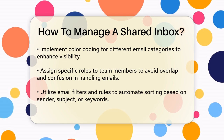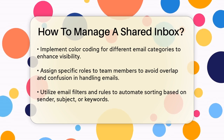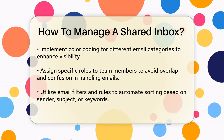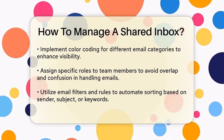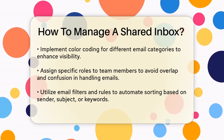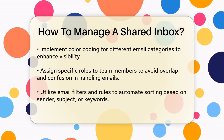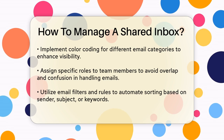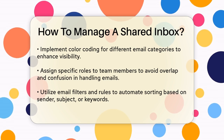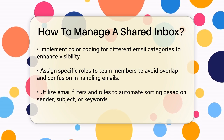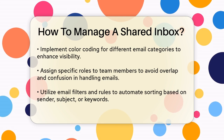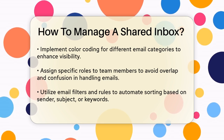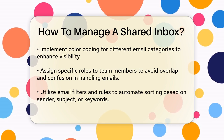Email filters and rules can automate a lot of the sorting process. You can set up filters to sort emails by sender, subject, or keywords, and automatically move them to specific folders or mark them as read. This ensures that everyone sees the emails that are relevant to them and reduces the risk of duplicate replies.